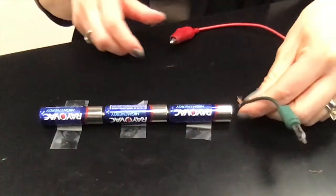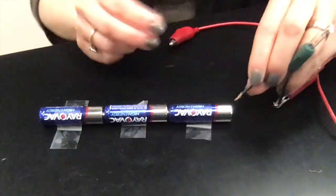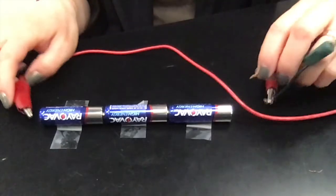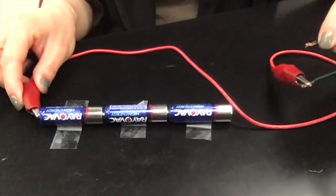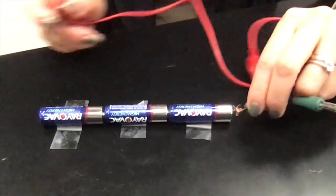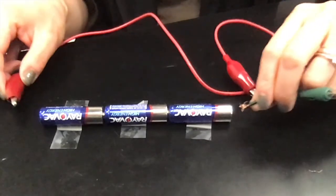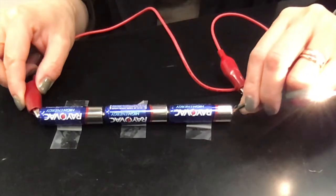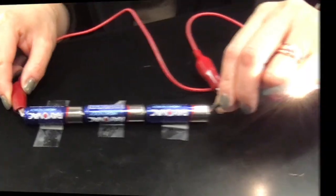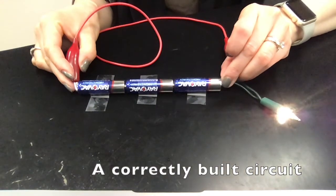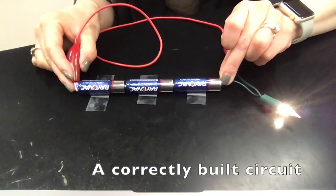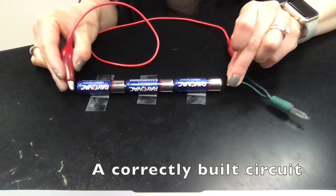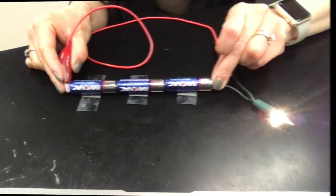One other issue that we came across was students not actually completing the circuit. There needs to be a complete circuit or path for the electrons to flow. If it's an incomplete path, the electrons are not going to flow and therefore the light cannot light up because there's not electrical energy. Here is an example of a correctly built circuit. Metal touches metal. All the batteries face the same way and it's a completely closed circuit.